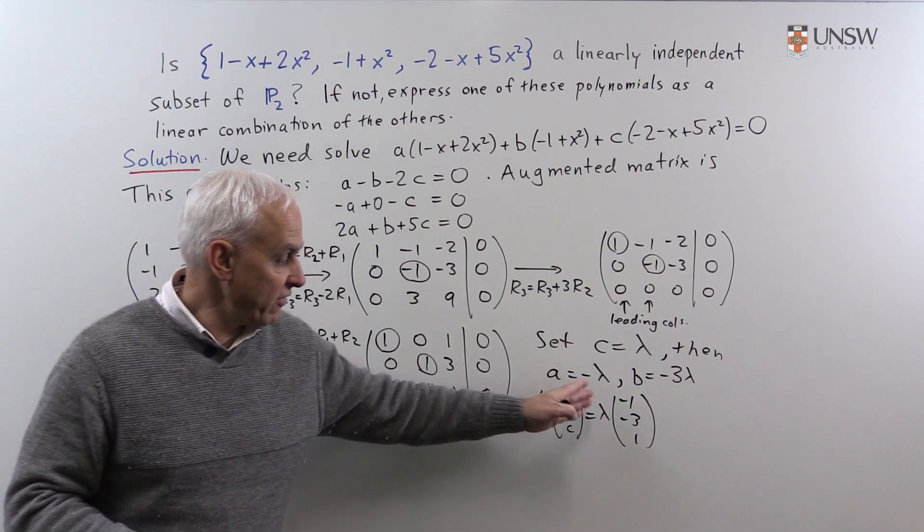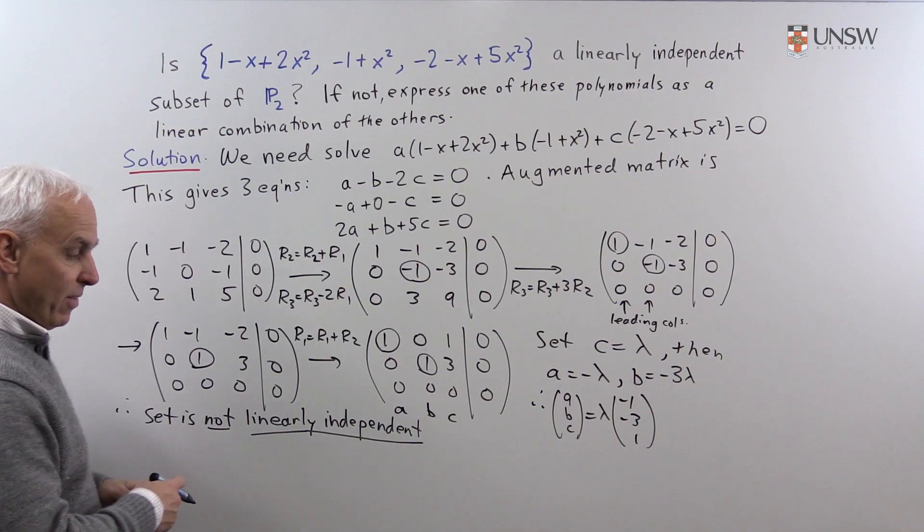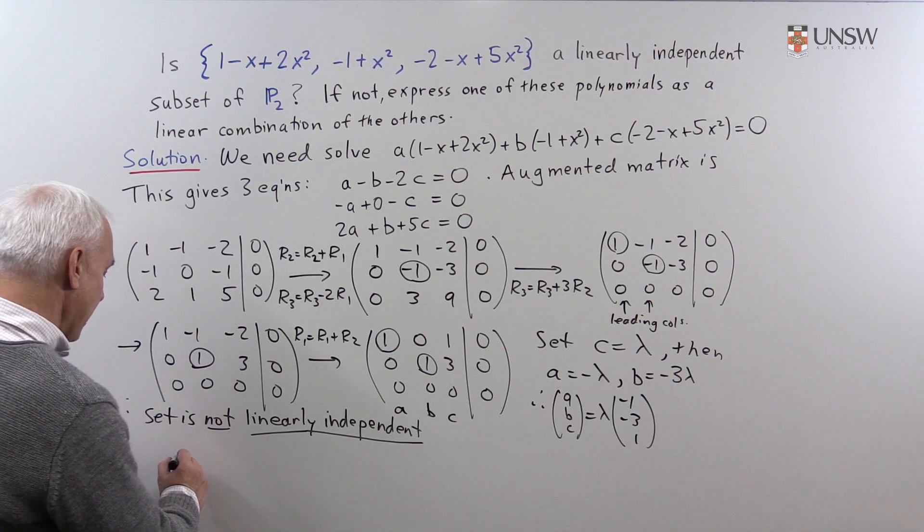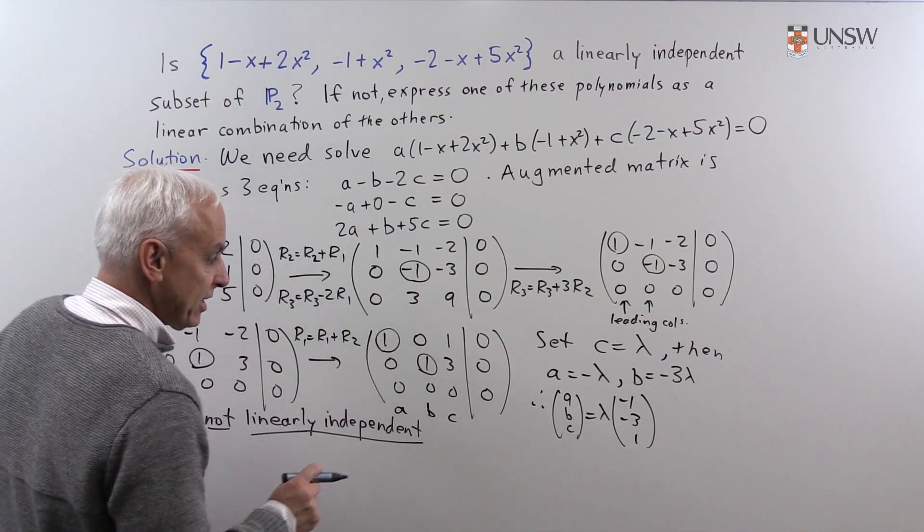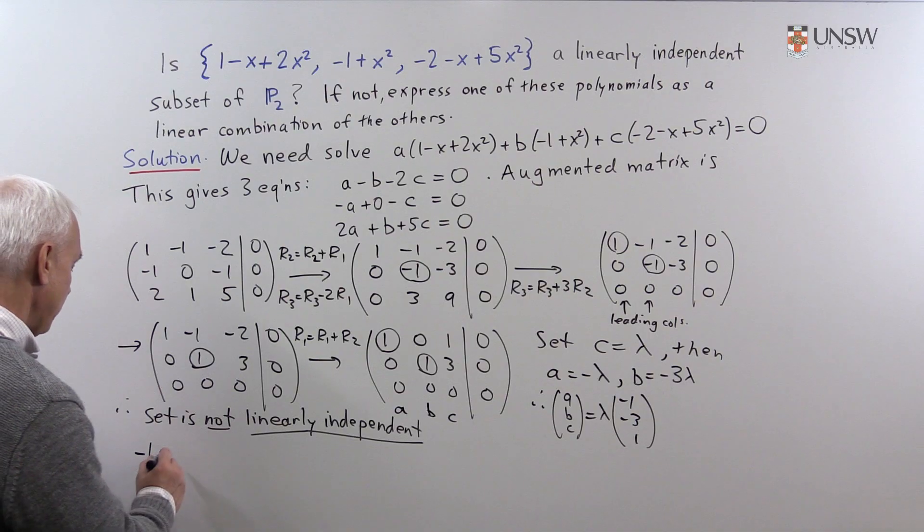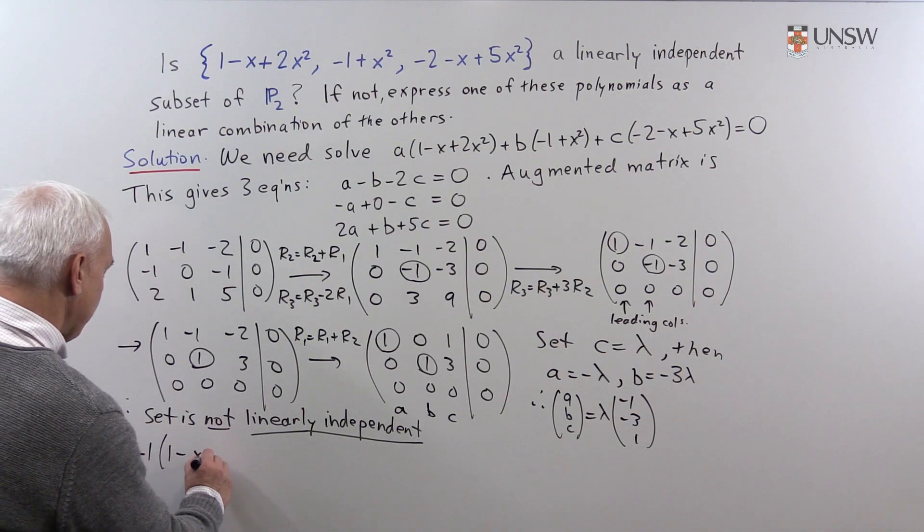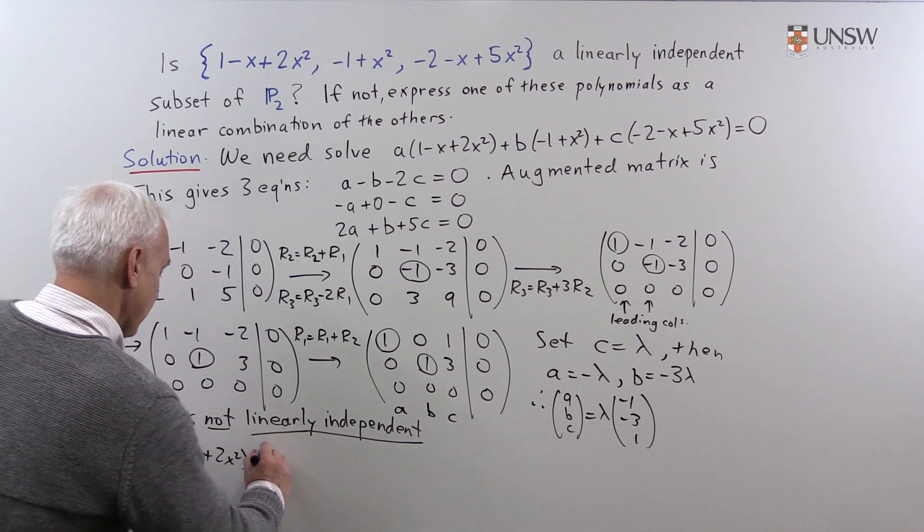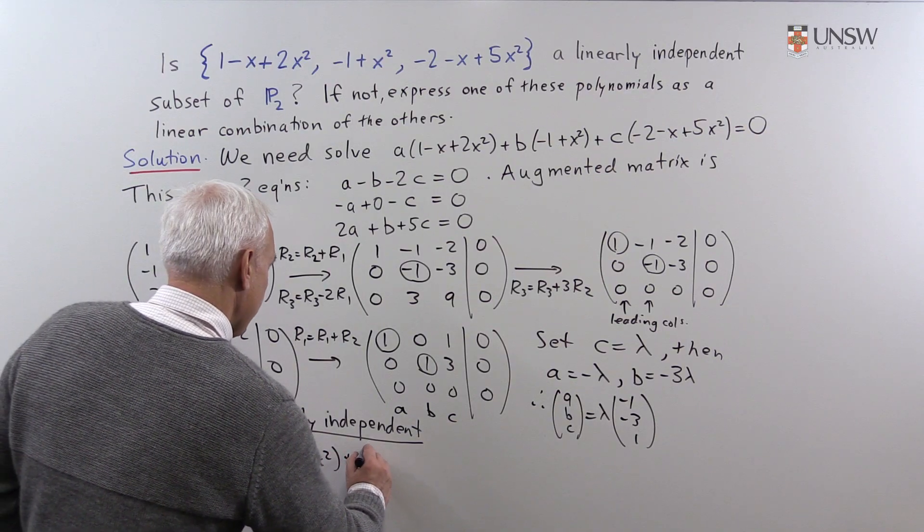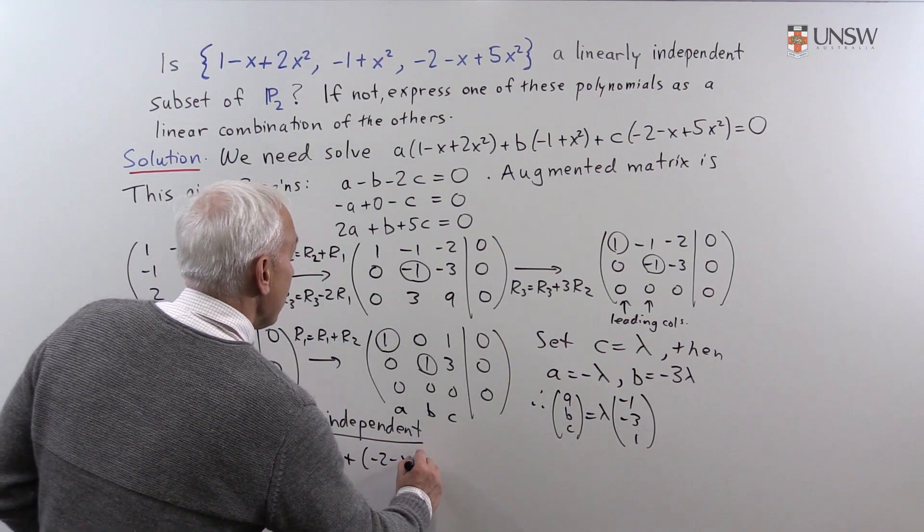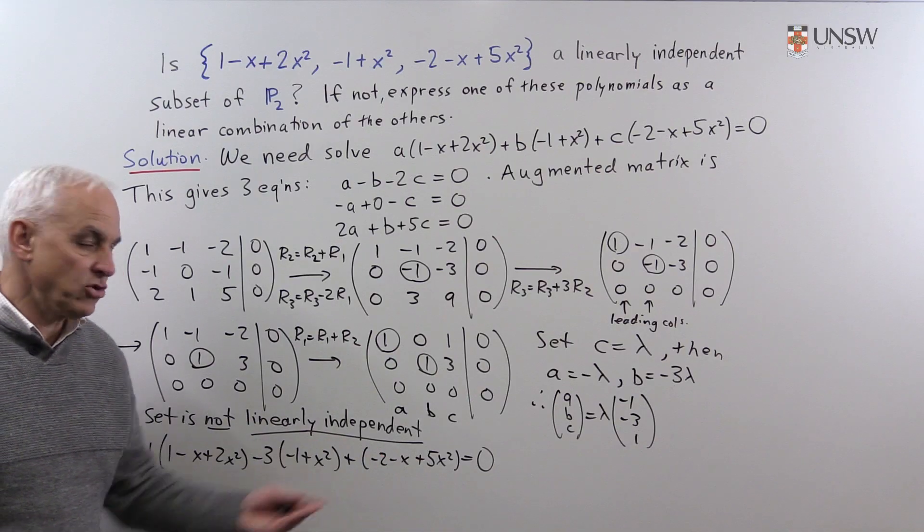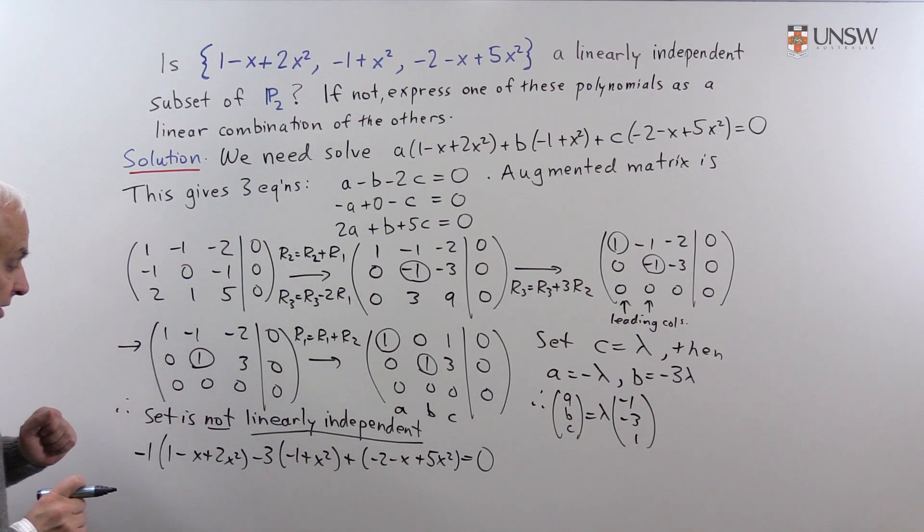So, if we want to express that as a relation, we could say that -1 times the first one plus -3 times the second one plus 1 times the third is going to be 0. In fact, we have a solution that -1 times (1 - x + 2x²) - 3 times (-1 + x²) plus 1 times (-2 - x + 5x²). So, that's actually equal to 0. So, there's a linear relation between these three polynomials, exhibiting that they are not linearly independent.